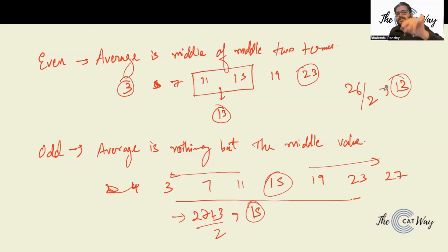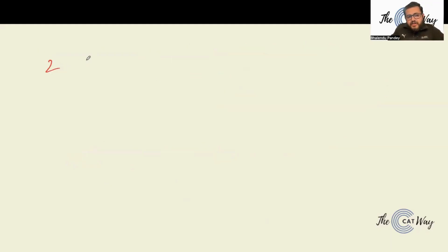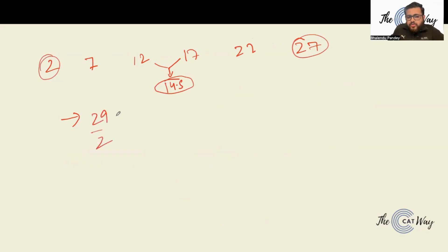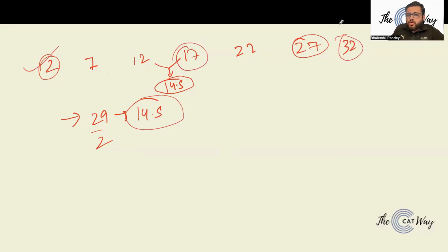Another example: 2, 7, 12, 17, 22, 27 — six even terms. The middle two are 12 and 17; their midpoint is 14.5. First term plus last term: 2 + 27 = 29, divided by 2 gives 14.5. Extending to 2, 7, 12, 17, 22, 27, 32 — seven odd terms — the middle term is 17. First plus last: 2 + 32 = 34, divided by 2 gives 17.